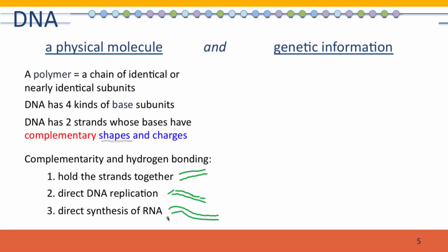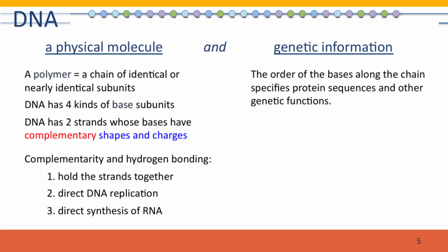Now, these sequences, these base pairings, also create the genetic information in the DNA—the order of the bases along the chain. Because that's what specifies protein sequences, which are the workhorses of the cell, and it also specifies other genetic functions.